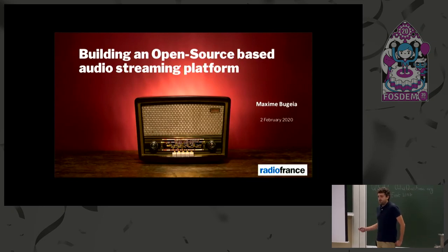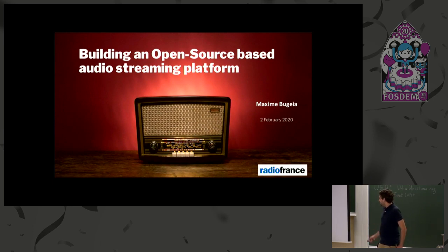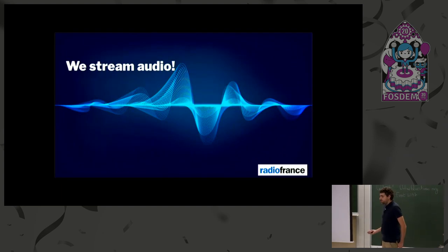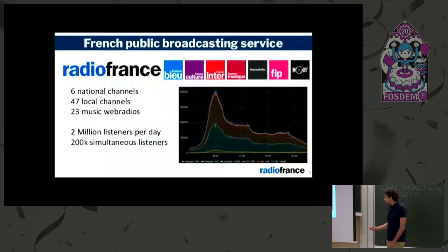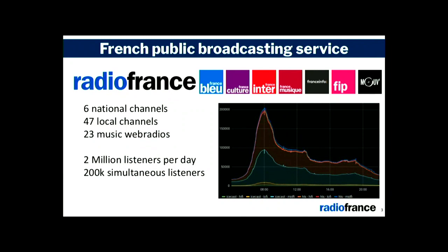We chose to build a new streaming platform with open-source software. We stream audio — we are a radio station broadcasting in France. We have seven brands, six national channels broadcast everywhere in France, 47 local channels mostly France Bleu, and 23 music web radios broadcast only on the internet. We have about 2 million listeners a day, with a peak in the morning reaching 200,000 simultaneous listeners.